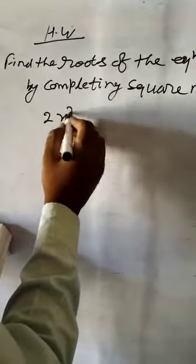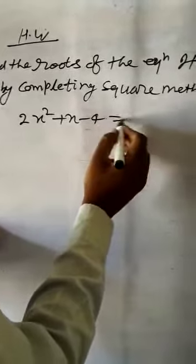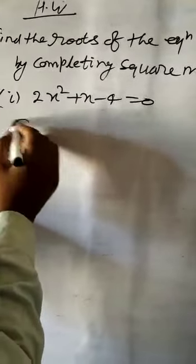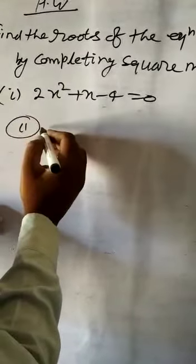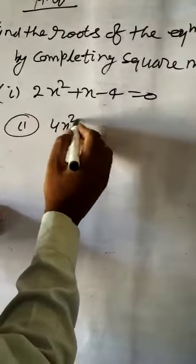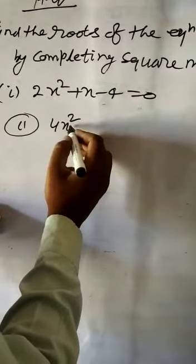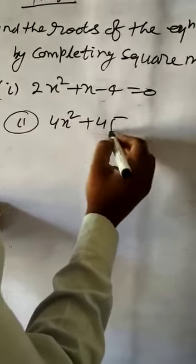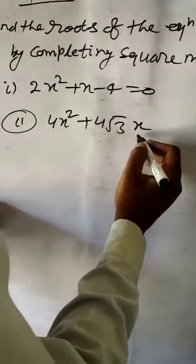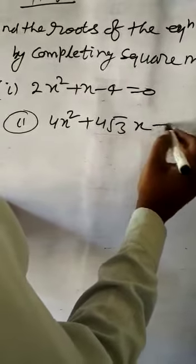Homework: solve 2X square plus X minus 4 equal to 0, and 4X square plus 4 root 3 times X plus 3 equal to 0, using the same method.